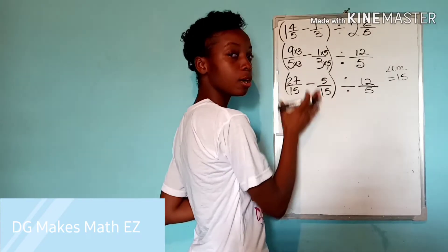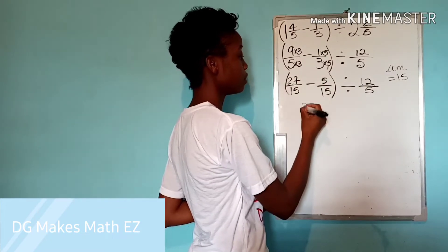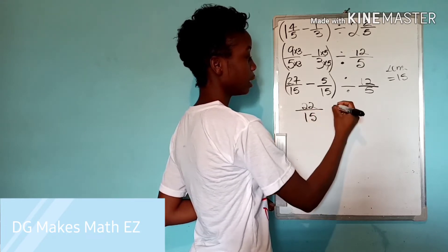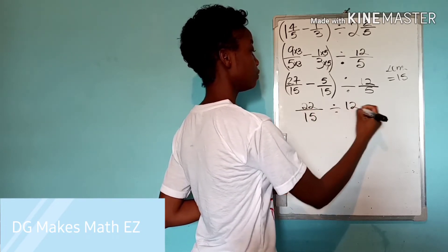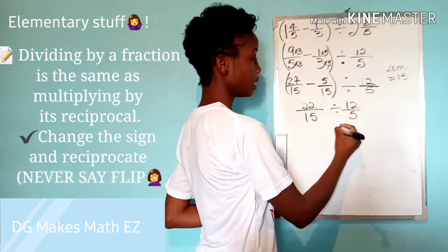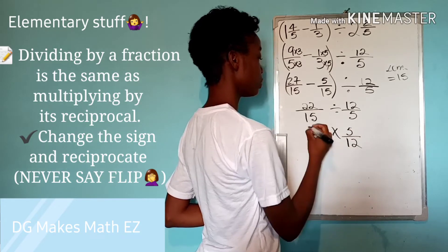And I keep it in my bracket until I'm through working it out. So 27 minus five is going to leave us with 22 divided by 15. And that is going to be divided by 12 over five. Dividing by 12 over five is the same as multiplying by its reciprocal, which is 5 over 12.